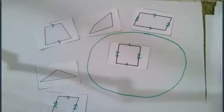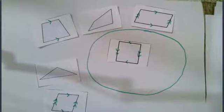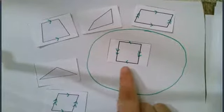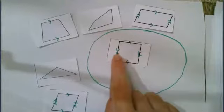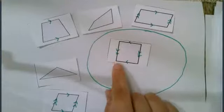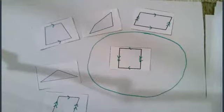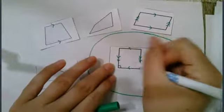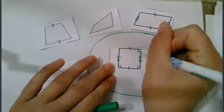You might have decided that the rule to be inside the oval is that the shape must be a rectangle. It must have four sides with four right angles and I'm going to indicate that these are right angles by drawing my right angle sign.